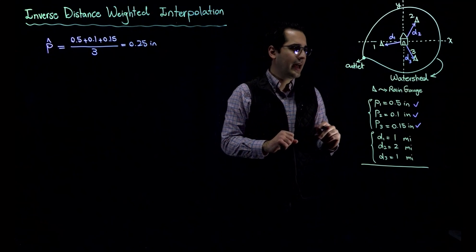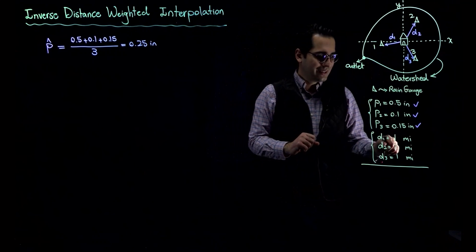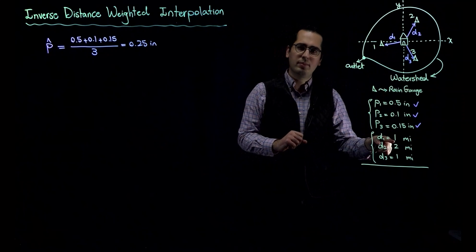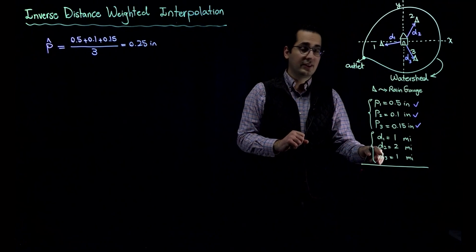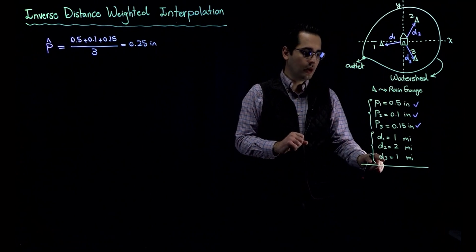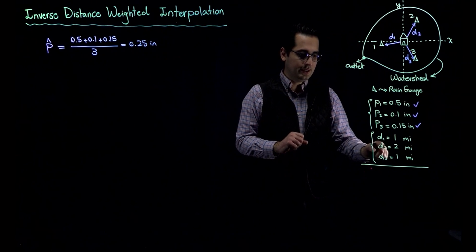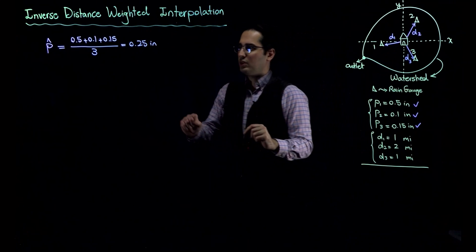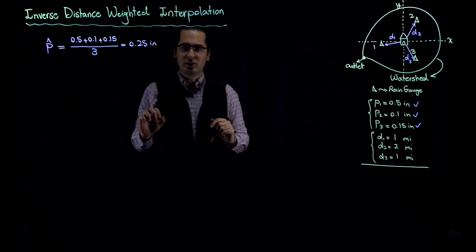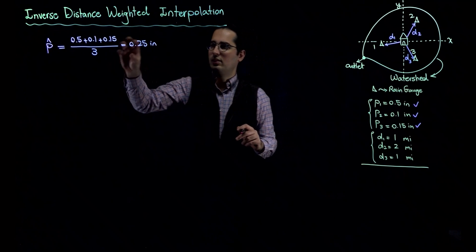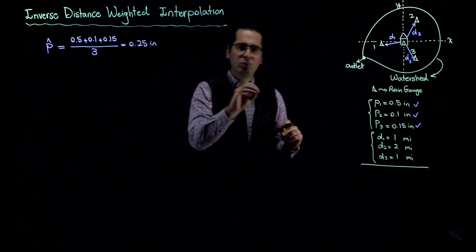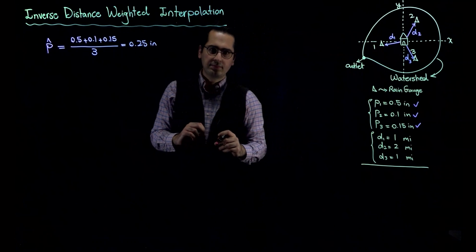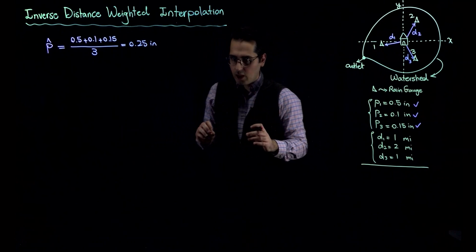There's something about this method: the weight associated with every single rain station is the same. However, the distance from your house to gauge number one is only one mile, and the distance to gauge number three is also only one mile, but the distance to gauge number two from your house is two miles. When you use this method, the result is based on equal weights for every single station.